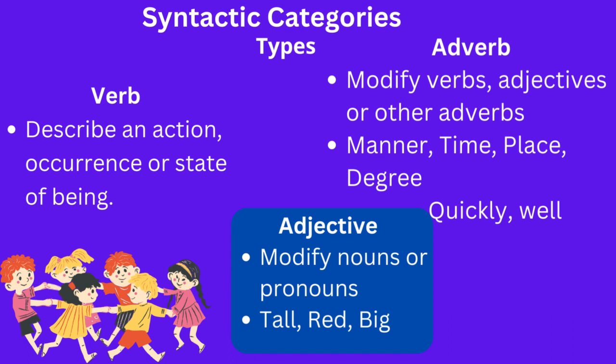Another category is the adjective. Adjectives modify nouns or pronouns, describing information about them — for example, tall, happy, red, big. Adjectives give us information about the qualities or characteristics of a noun or pronoun and typically come before the noun they modify. For example, 'beautiful red rose' — here, 'beautiful' is an adjective describing the red rose.